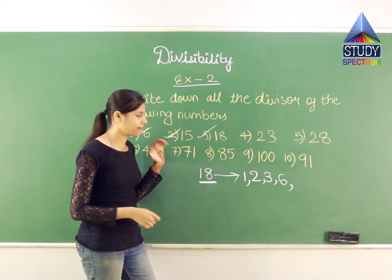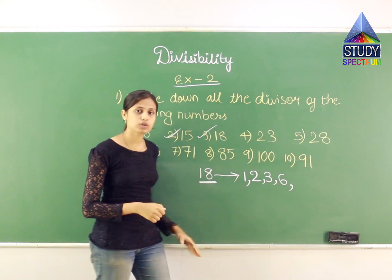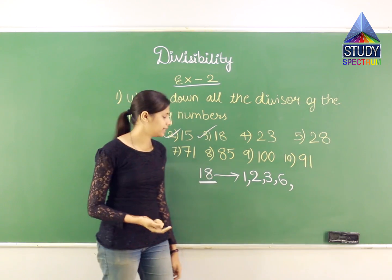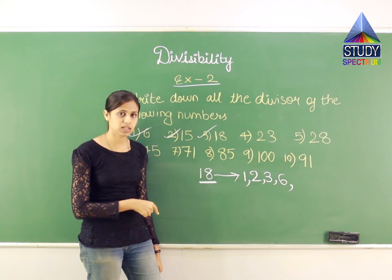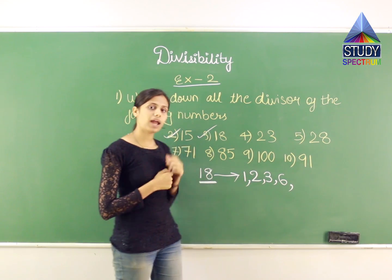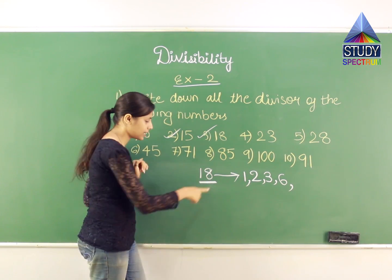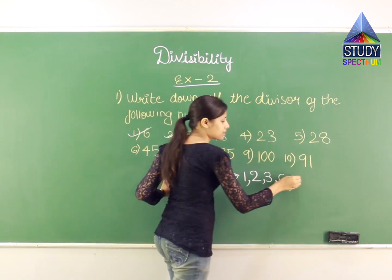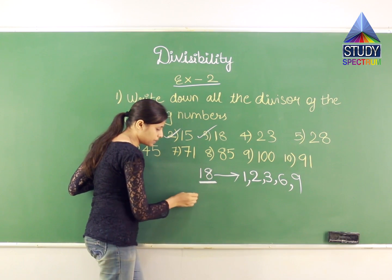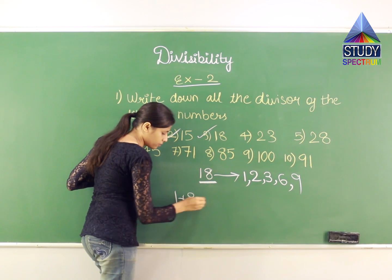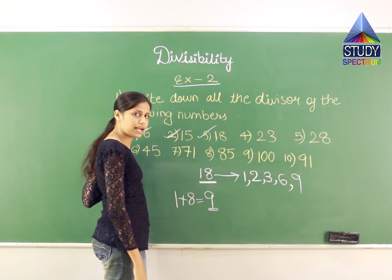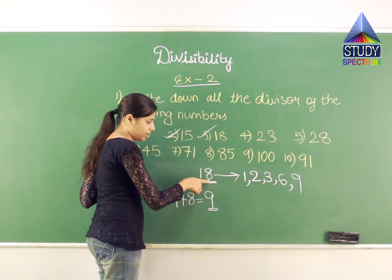Now 7: 7×1=7, 7×2=14, 7×3=21 — I don't get 18. So 7 is not a divisor of 18. Now 8: 8×1=8, 8×2=16, 8×3=24 — I don't get 18. So 8 is not a divisor for 18. Now 9: 9×1=9, 9×2=18 — yes, I get 18! So 9 is a divisor of 18. You can also check: 1+8=9, and 9 is divisible by 9. So 18 is divisible by 9.